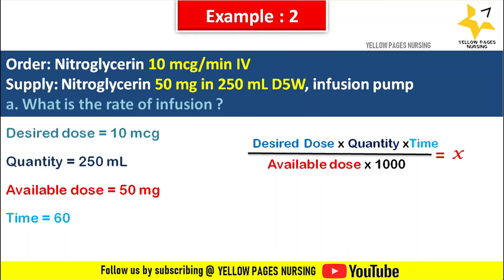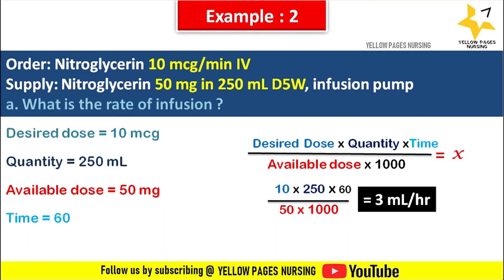We need ml per hour to set in the infusion pump. To convert 10 microgram per minute to mg per hour, we multiply 10 mcg per minute by 60. Applying this in the formula: 10 × 60 × 250 ÷ (50 × 1000) = 3 ml per hour. Hence, we set 3 ml per hour in the infusion pump.